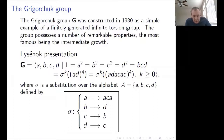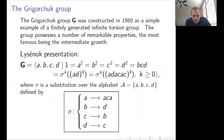Looking at this presentation: we have simple relators — A squared, B squared, C squared, D squared — meaning all generators are involutions. Then we have BCD equals 1. Together with being involutions, this implies that B, C, and D commute with one another, forming a Klein four-group. Then we have those complicated relators, (AD)^4 and (ADACAC)^4. We apply sigma infinitely often to each of them, generating an infinite set of relators. This presentation is optimal — every relator is essential.